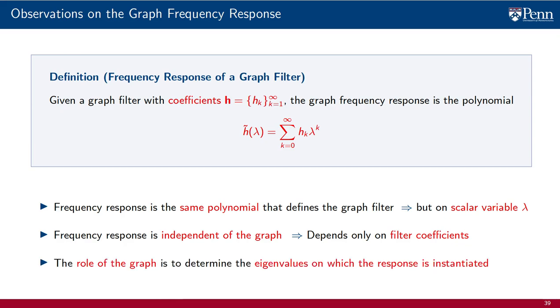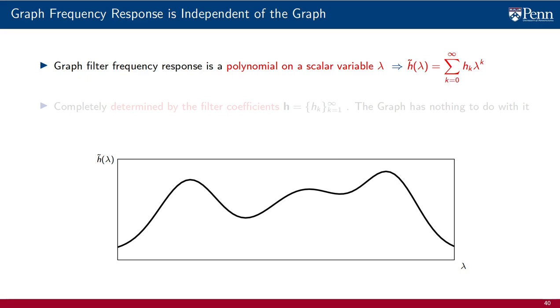In a graph filter, the role of the graph is to determine the eigenvalues on which the response is instantiated, but it doesn't play a role in the values that the graph frequency response itself takes. To explain these points better, we show an illustration of a graph frequency response. It's just a single variable analytic function. It's a function of a single scalar variable. It is completely determined by the filter coefficients. The graph has nothing to do with it. There's no graph appearing anywhere in this slide.